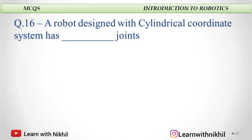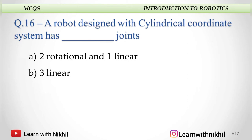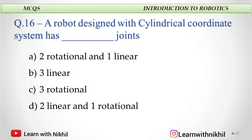Next question: A robot designed with a cylindrical coordinate system has dash joints — two rotational one linear, three rotational, or two linear and one rotational? For a cylindrical coordinate system, it has two linear and one rotational joint.